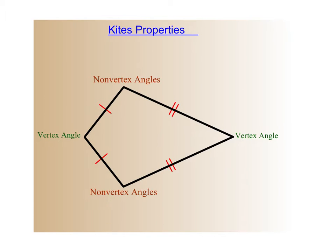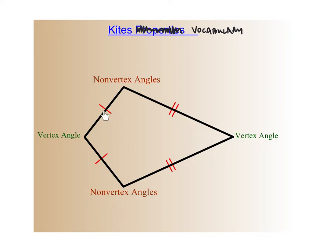A couple of items you need to be aware of with regard to kites — I'd call this kites in general vocabulary. Within a kite, we've already studied this: it's a quadrilateral with two distinct consecutive pairs of congruent sides. So we've got congruent sides next to each other, and the two pairings are distinct from each other. In between the consecutive congruent sides we have vertex angles, and between non-congruent sides we have what's called a non-vertex angle.